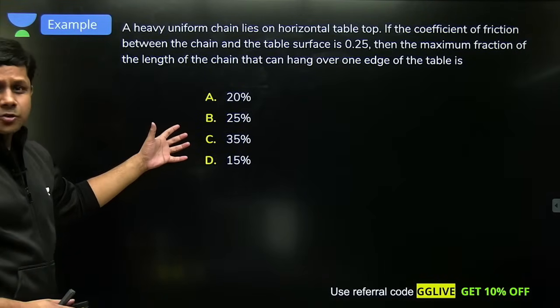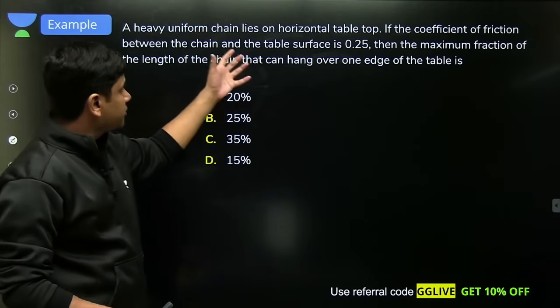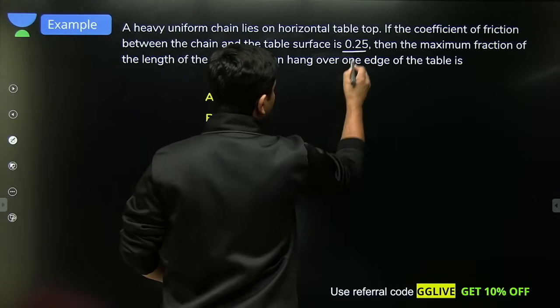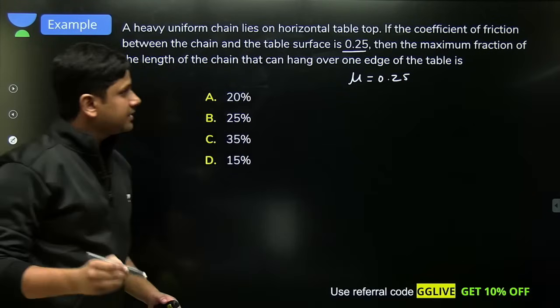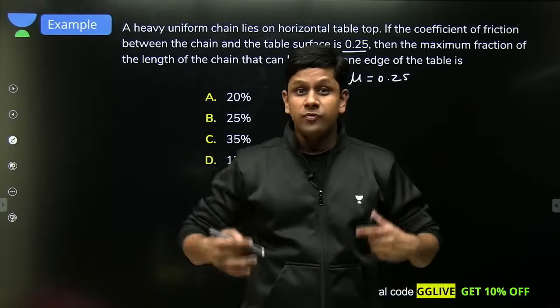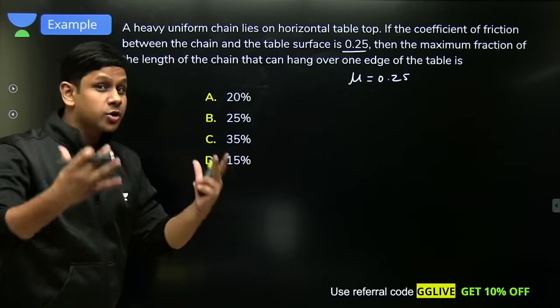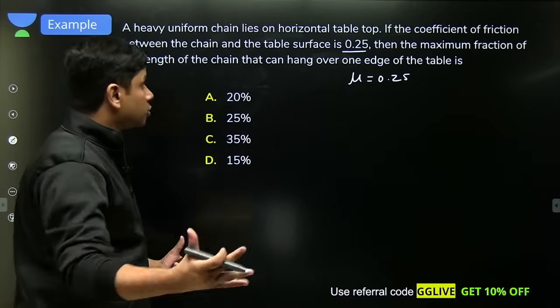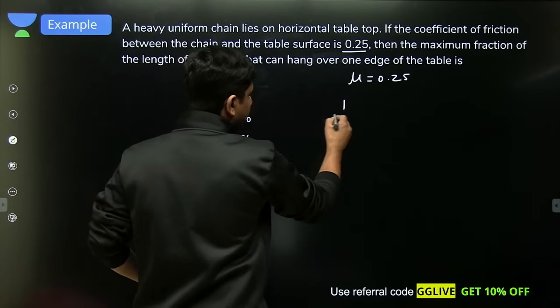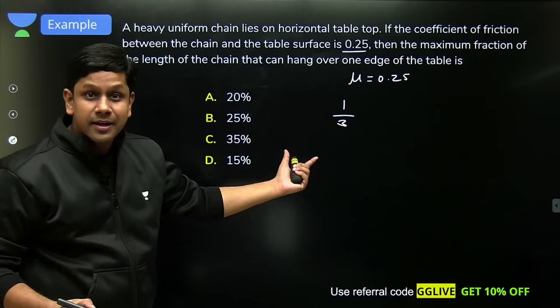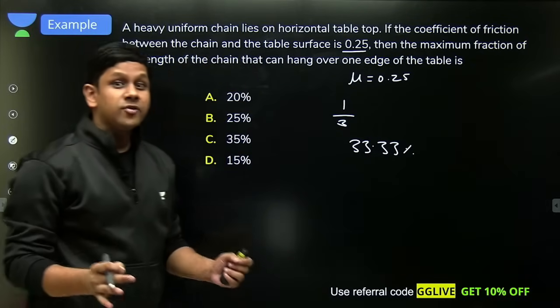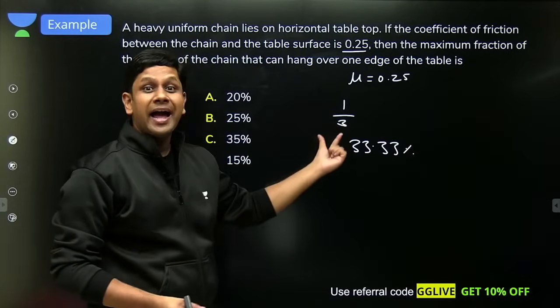Let's try a question. This is a previous year question from NEET. A heavy uniform chain lies on horizontal table top. If the coefficient of friction between chain and table surface is 0.25, μ is given as 0.25, then the maximum fraction of length that can hang so it doesn't slip. Fraction means options like one-third, one-half, one-fifth.